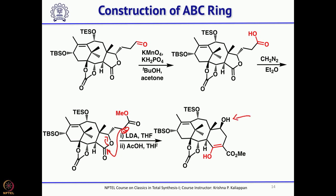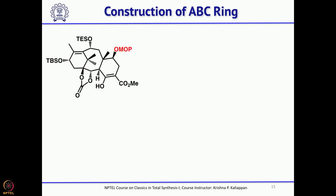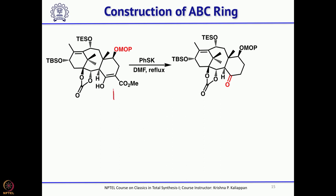The hydroxyl group needs to be protected and converted to the oxetane ring. The hydroxyl group was protected with a substituted vinyl ether as MOP (methoxypropyl ether). This is a beta keto ester, and the ester group can be easily cleaved — potassium thiophenylate is used to remove the ester, giving the ketone.